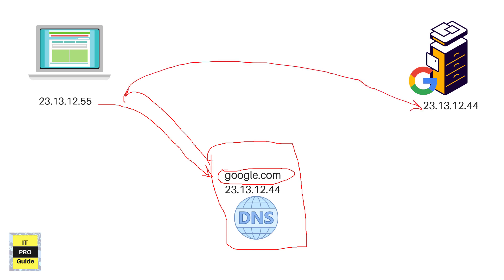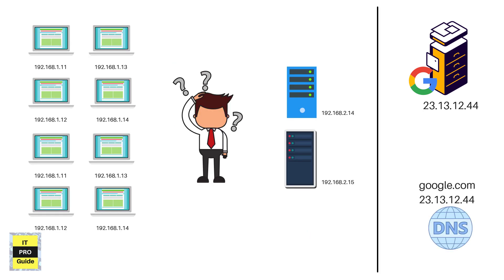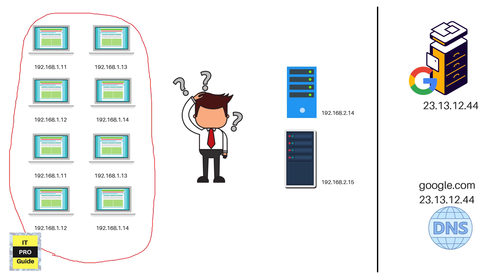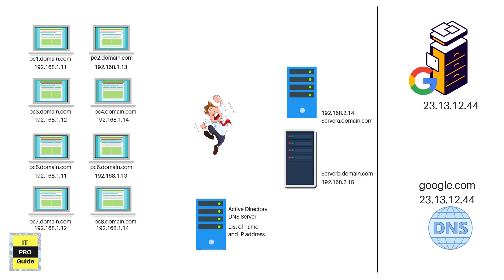Similarly, think about all the computers in your organization with their IP addresses. As an administrator, keeping all those IP addresses in memory is not an easy way to manage things. Having a DNS in your organization helps you name these computers and easily identify them — you can name a computer based on who uses it, or name a server based on the service it provides, so you use meaningful names instead of IP addresses.